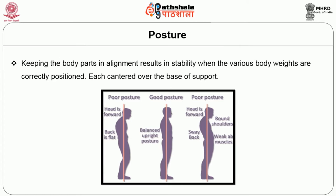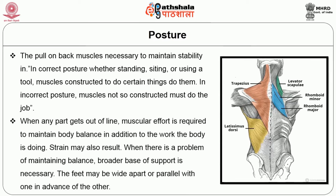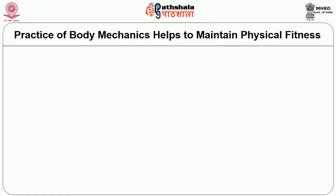Posture — keeping body parts in alignment — results in stability when body weights are correctly positioned, each centered over the base of support. Consider the pull on back muscles necessary to maintain stability in incorrect posture, whether standing, sitting, or using a tool. Muscles constructed to do certain things function correctly; when any part gets out of line, muscular effort is required to maintain body balance in addition to the work being done. Strain may also result when maintaining balance is difficult; a broader base of support may be necessary, with feet placed wide apart or one foot advanced.